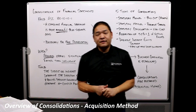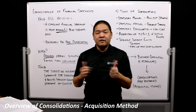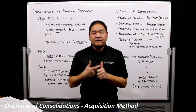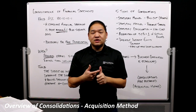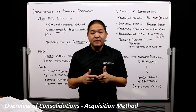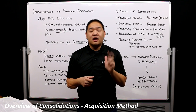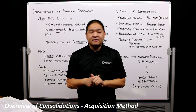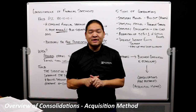In this lesson, we've talked about an overview of the consolidation of financial statements, we also talked about control, and then the third thing we covered were the five types of combinations that you're going to see.